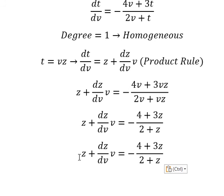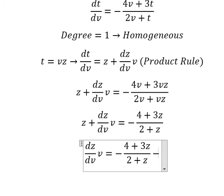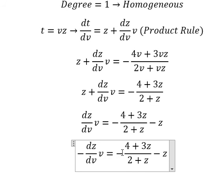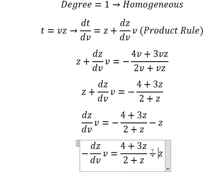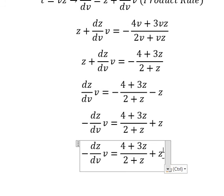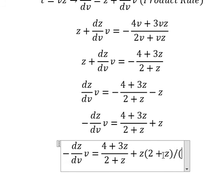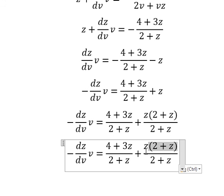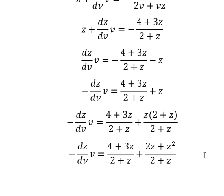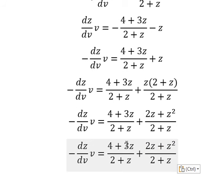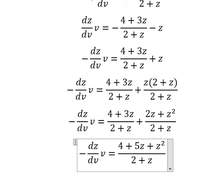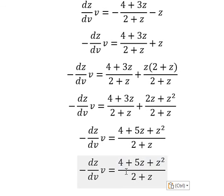So V, V, V and V simplify. We put Z on the right side, and the negative terms on the left. We do a common denominator, giving us Z squared. So 3Z with 2Z gives 5Z, and we have Z squared in here. Now we put DV and V to the right.